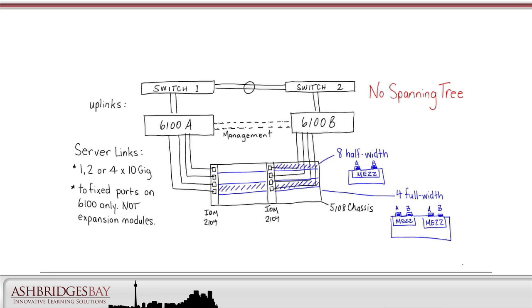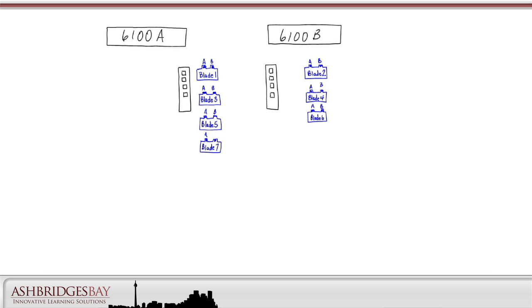Switching works the same whether you have one, two, or 20 chassis connected to the 6100s. Let's look at what happens in the IOMs first. Let's draw our 6100s and our two IOMs and add eight half-width blades. Each blade has a 10GB connection to each IOM via the midplane. There's no switching in the IOMs, it's effects. The blades are pinned to specific server links.